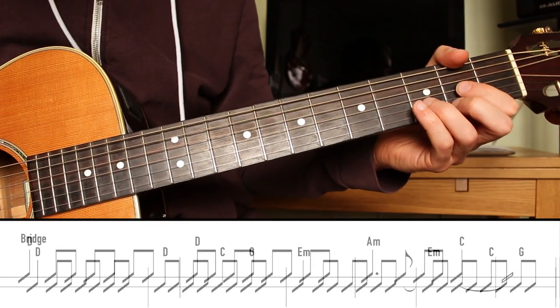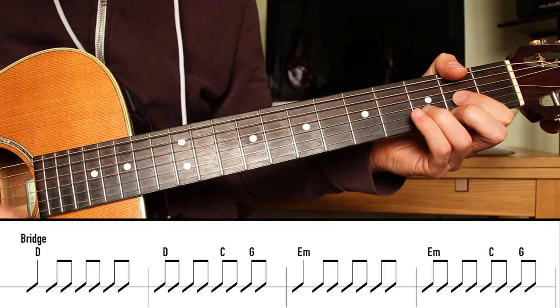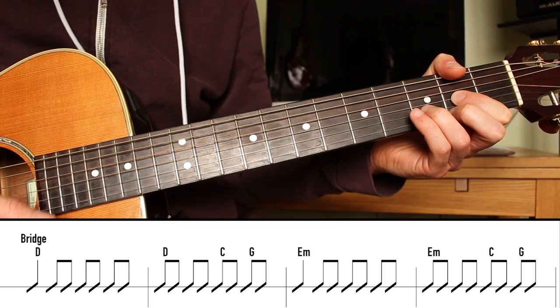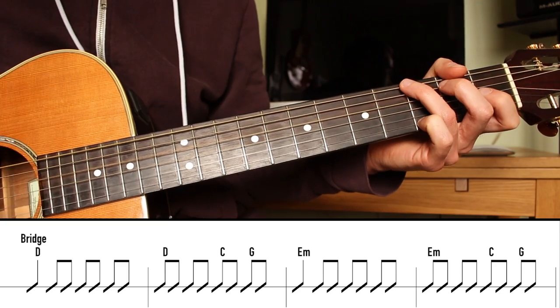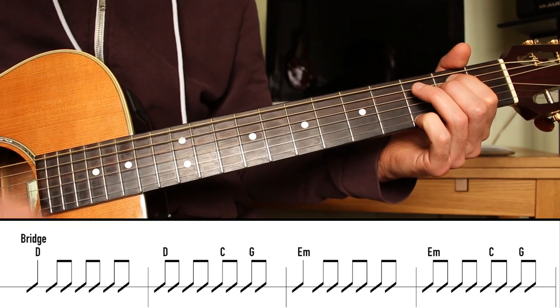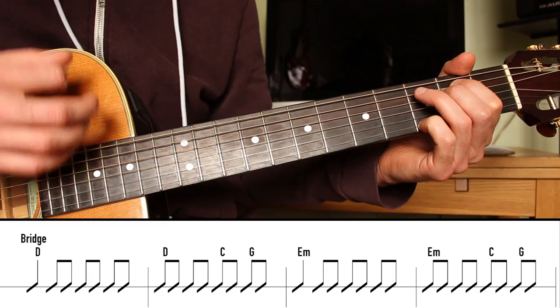So we start on the D chord for one measure. The note, the rhythm is 1, 2, and 3, and 4, and stay on the D. 1, and 2, and C, and G, and E minor. 2, and 3, and 4, and E minor.